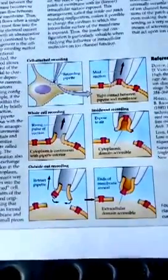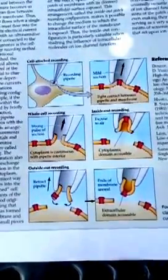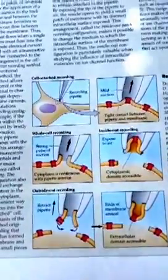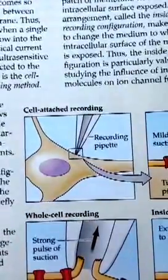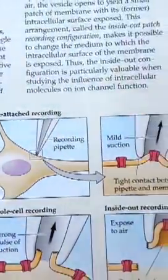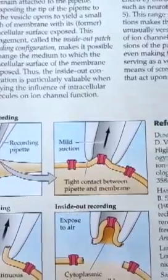First, we want to go through the patch clamp techniques that we've already gone through in class. The first is the cell attached recording. In this situation, there's a tight seal between the membrane and the pipette so no ions can flow in between that area, only through the pipette.